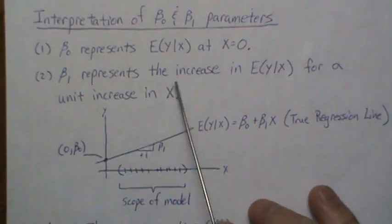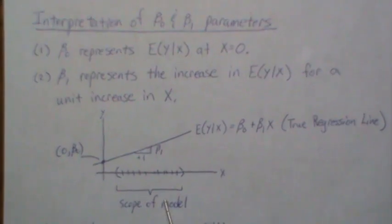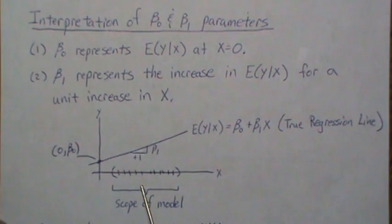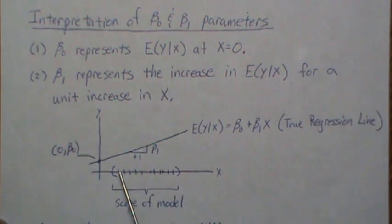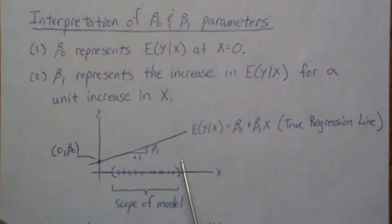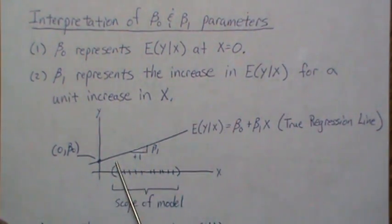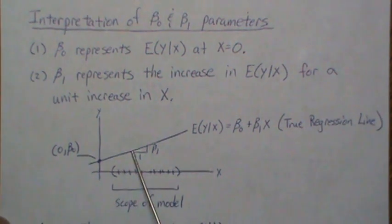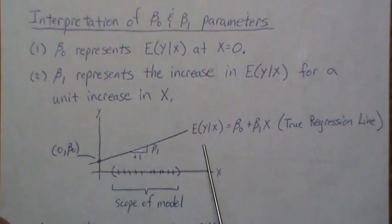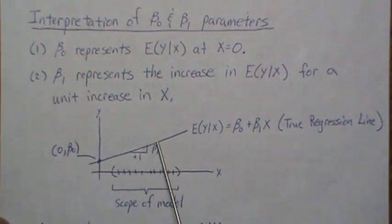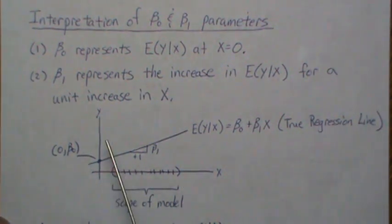These interpretations are only valid within the scope of the model. The scope is the range of x-values over which we collected data. Our data generally follows this slope within that range, but outside it the relationship may be completely different, so beta-1 is only meaningful within the scope.